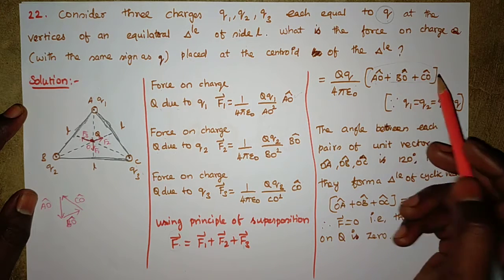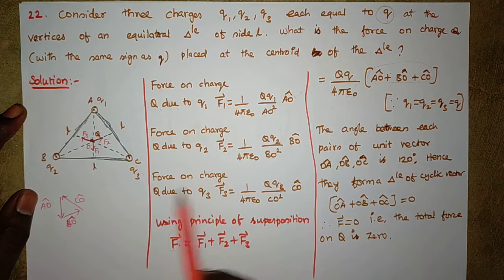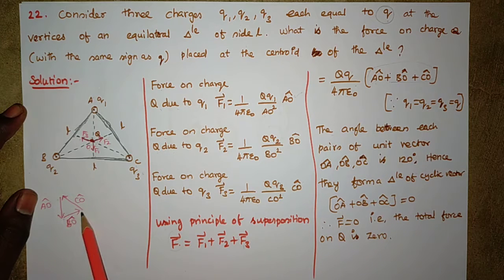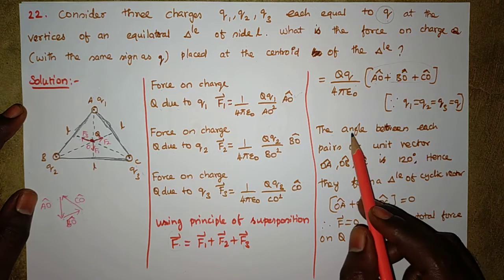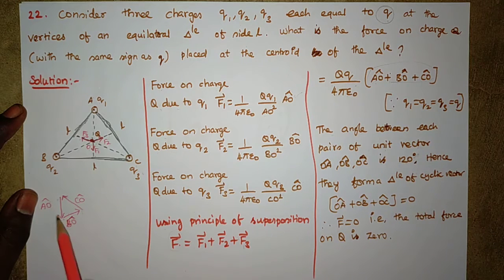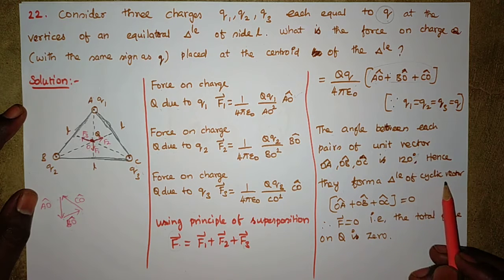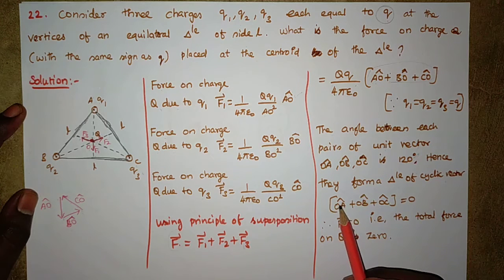Now the angle between each pair of unit vectors OA cap, OB cap, and OC cap is 120 degrees. Hence they form a triangle of cyclic vectors. The cyclic vector sum is zero.